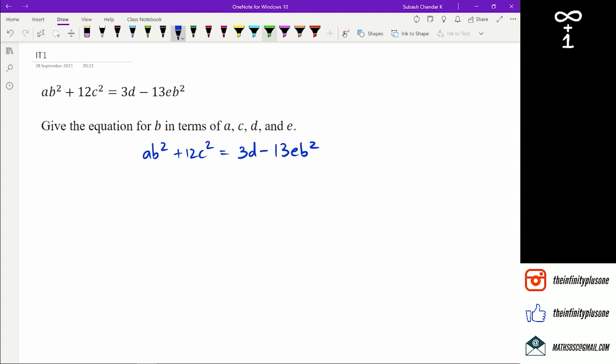So I'm supposed to bring b by itself. As you can see there is a b here and a b here. Everything else I need to move to the right hand side. So the first thing is I'm not going to touch anything with the a, so I'm just going to leave ab² there. However, I will move the minus 13eb² to the left hand side, which will become plus 13eb². And I've got plus 12c² equals 3d.